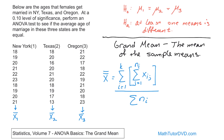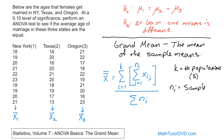N sub i is the sample size of the i-th population. It appears in two different places in the equation. So we have a population of New York where we took 10 samples — the sample size is 10. Texas: 10 samples, sample size 10. Oregon: 10 samples, sample size 10. I is just a letter representing a number. So N sub 1 is 10, N sub 2 is 10, N sub 3 is 10.